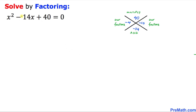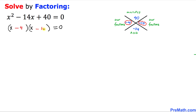Now let's start working on the factored form. We write down two sets of parentheses set equal to zero. Since we are dealing with x, x comes first in each parenthesis. The first factor is negative 4, so negative 4 goes in the first parenthesis, and the second factor is negative 10 goes in the second parenthesis. These are our factors.